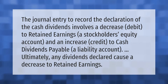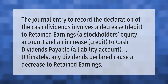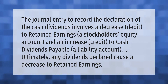The journal entry to record the declaration of cash dividends involves a decrease debit to retained earnings, a stockholder's equity account, and an increase credit to cash dividends payable, a liability account. Ultimately, any dividends declared cause a decrease to retained earnings.